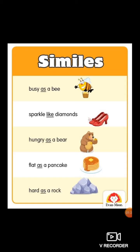Next simile: 'Hungry as a bear' — comparison between two different objects using 'as,' so it's simile. 'Flat as a pancake' — compared with pancake using the word 'as.' 'Hard as a rock' — comparison between two different objects using the word 'as.' All of these use 'as' or 'like,' confirming they are similes.